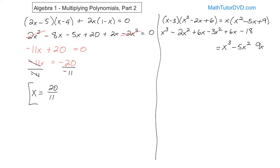Now we combine like terms. On the left we have x cubed, on the right we have x cubed — subtract x cubed from both sides and it disappears. The negative 2x squared and negative 3x squared on the left combine to negative 5x squared. The 6x and 6x on the left combine to 12x. We also have negative 18 on the left. On the right, after canceling x cubed, we have negative 5x squared.